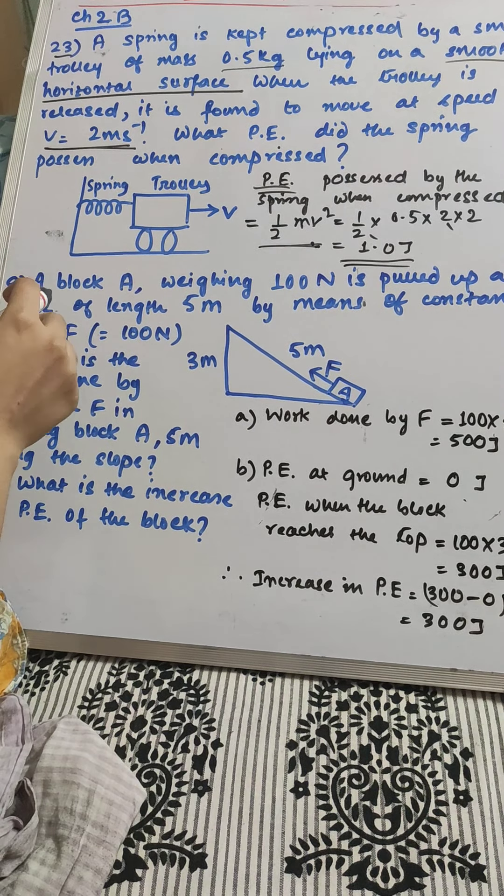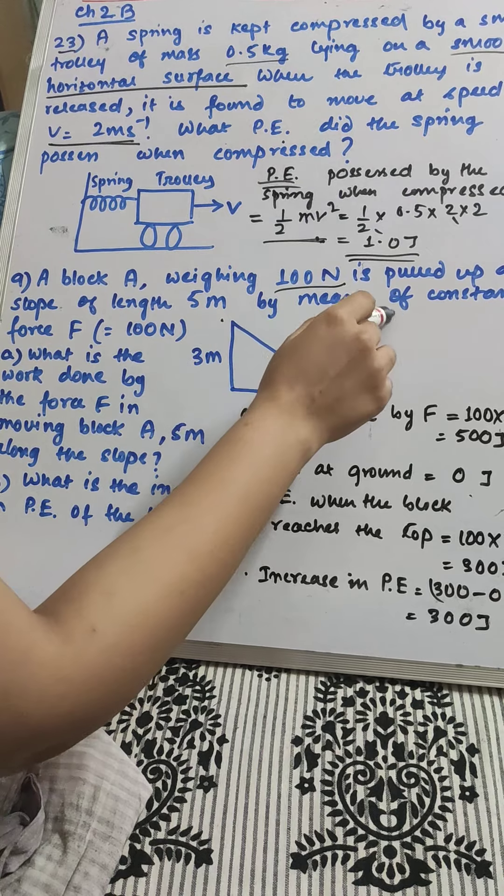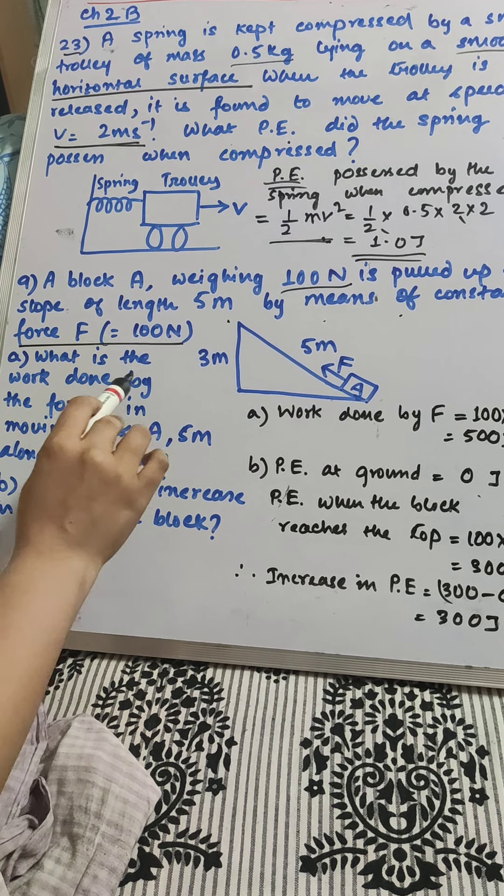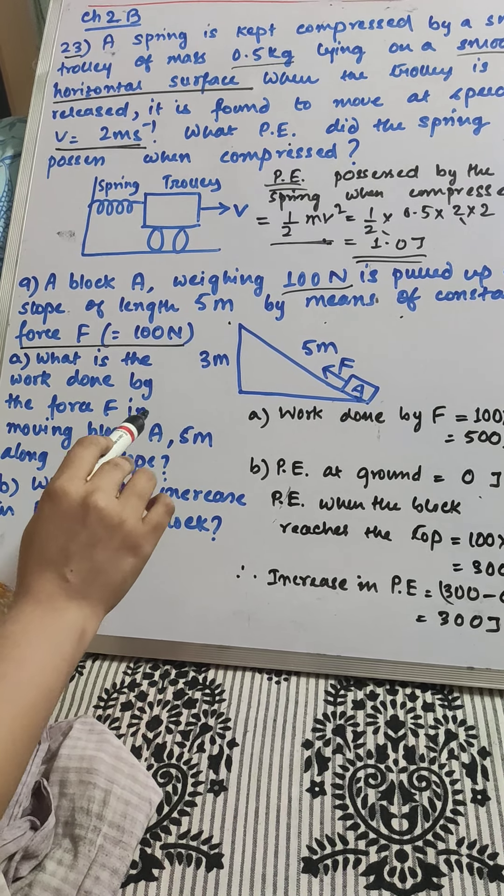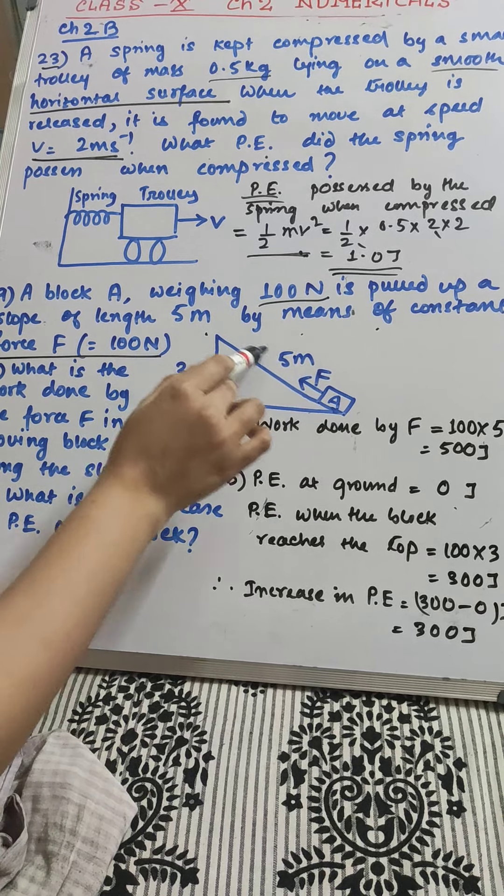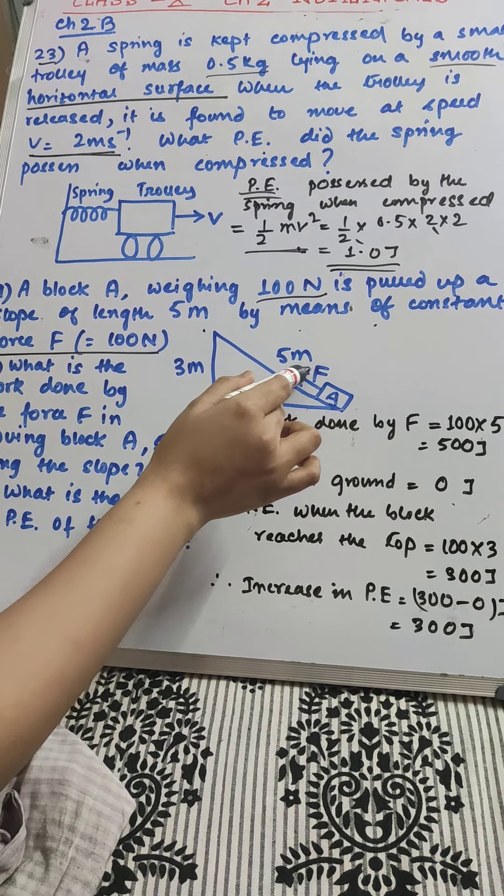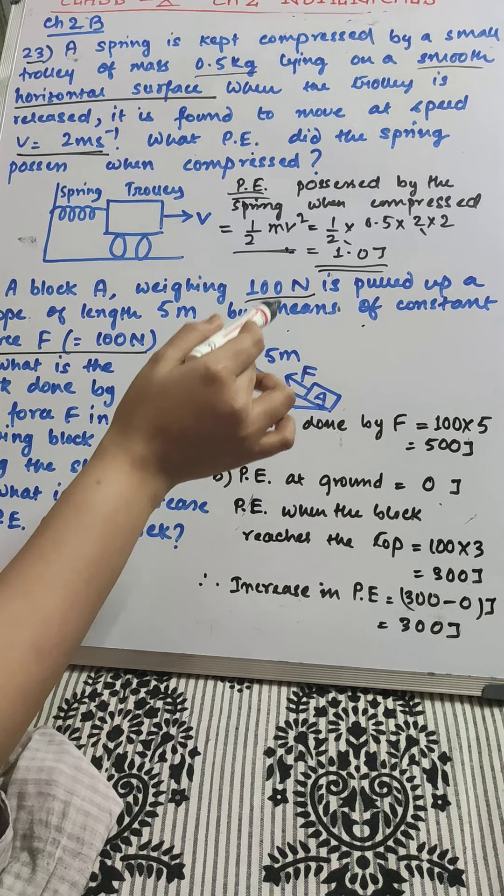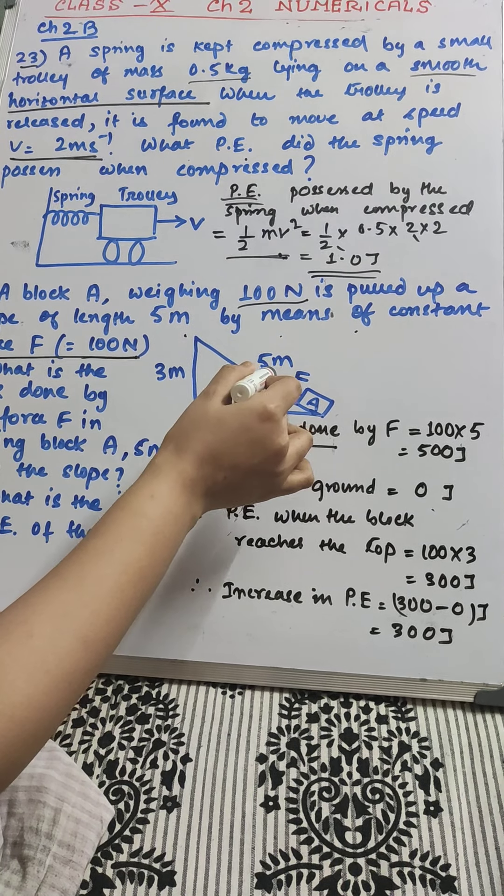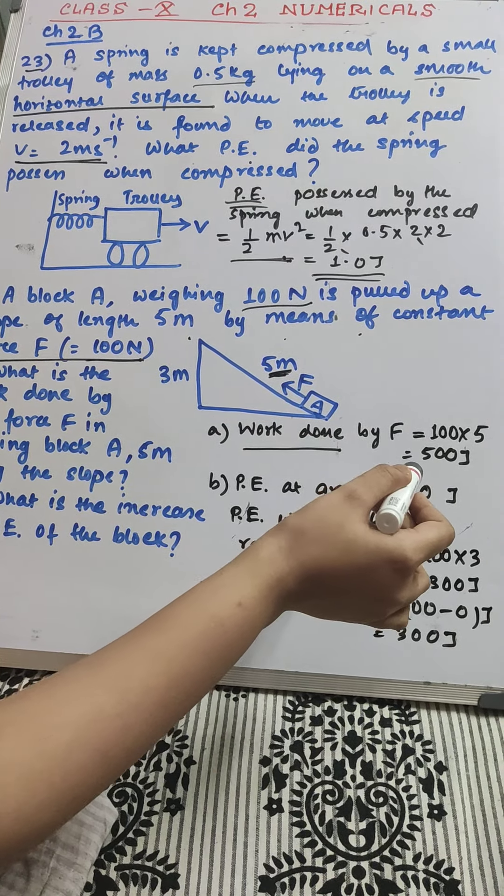Look at sum number 9. A block A weighing 100 N is pulled up a slope of length 5 meter by means of constant force 100 N. What is the work done by the force in moving the block A 5 meter along the slope? The direction of force is also given, acting in the same direction. Simple work done will be force into displacement: 100 N into 5 meter.